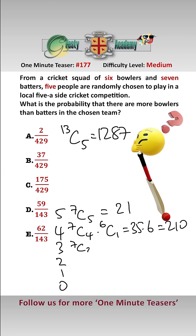For three batters we pick three from the seven and then we pick two bowlers from the six and that equals 35 times 15 which is 525.